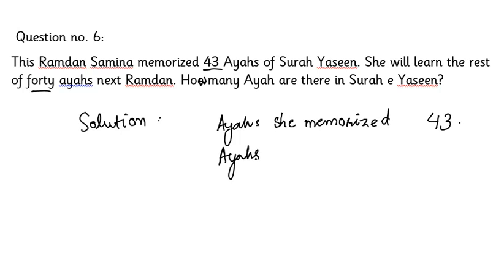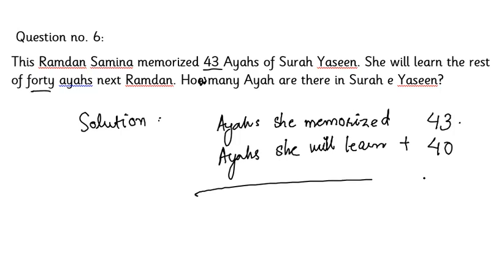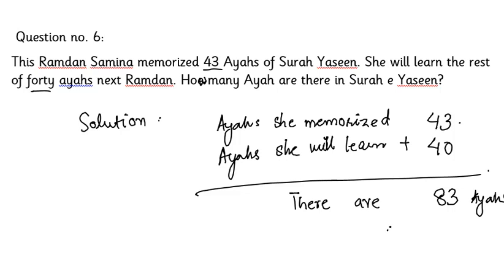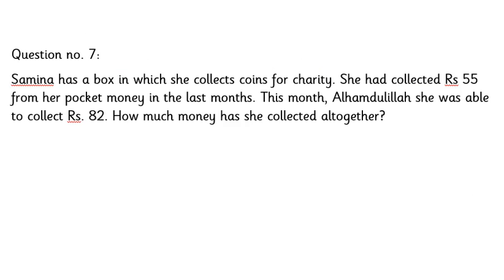Write the solution: ayat she memorized is 43, ayat she will learn is 40. Add them up: 43 plus 40 equals 83. There are 83 ayat in Sura Yasin.